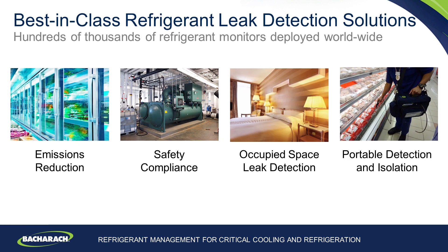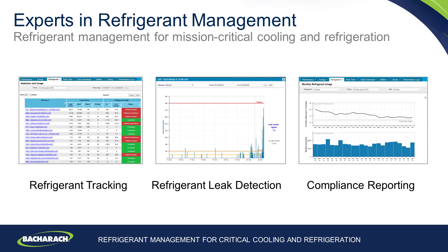BACARAC make a range of best-in-class refrigerant leak detection solutions deployed worldwide in hundreds of applications. The aims are to reduce refrigerant emissions, assist with safety compliance, help in occupied space leak detection scenarios like hotels, and also a range of portable and handheld leak detection devices. BACARAC are also experts in refrigerant management, with software solutions to help track refrigerant usage, assist with leak detection reduction strategies, and help with compliance reporting, be it EPA 608, CARB, or FGAS.